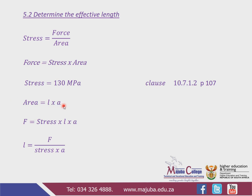Now, area is equal to the effective length multiplied by the throat — the throat being the throat distance, denoted by the letter A. So force equals stress multiplied by effective length multiplied by throat. We make L the subject of the formula by dividing both sides by stress and throat. Therefore, effective length equals force divided by stress multiplied by throat.